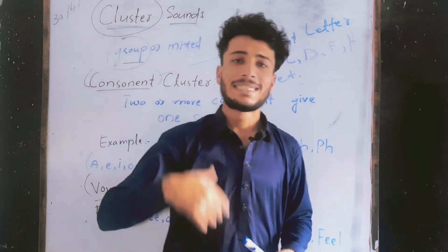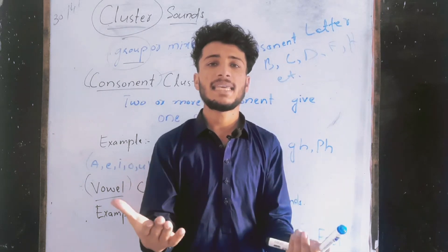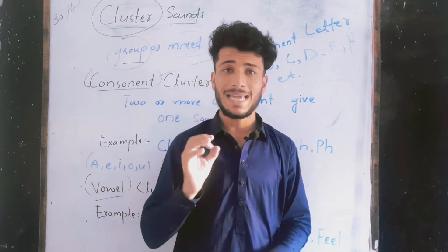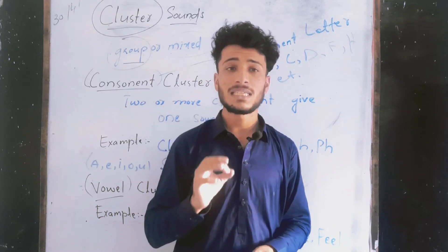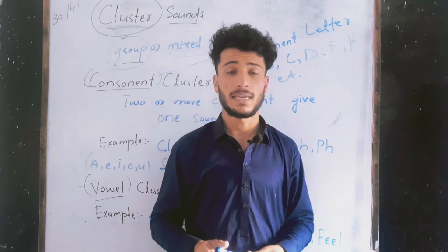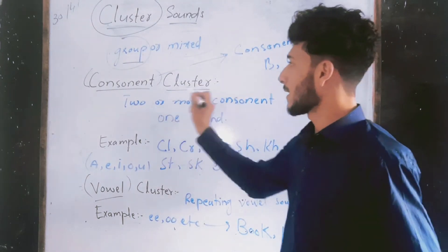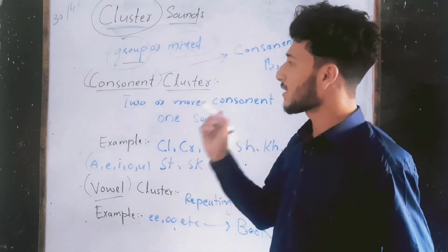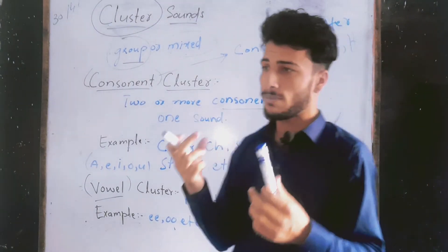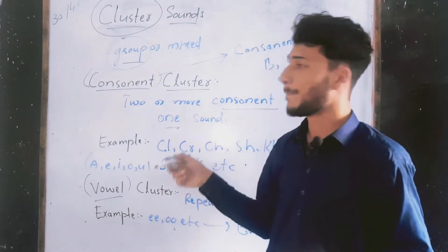Vowels — a, e, i, o, u — are letters that don't have any collapse and they don't have any blockage. So consonant cluster: we have a consonant cluster when we have two consonants together that give us one sound, or maybe two sounds where another sound has a little bit of change in it.